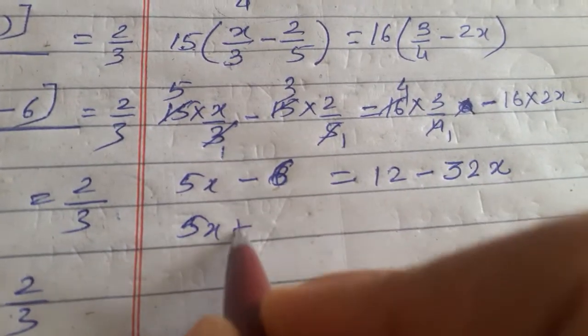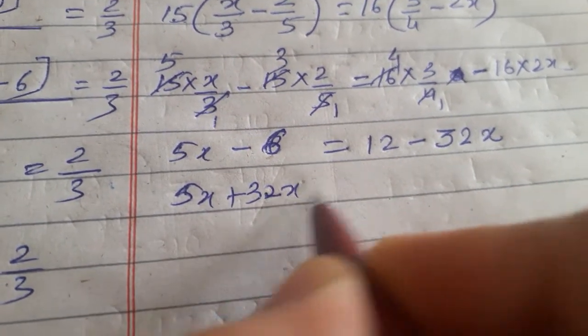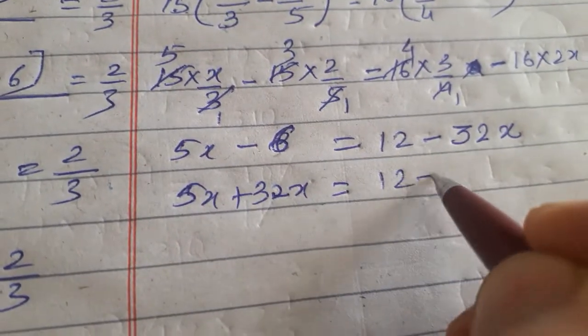Now collect the like terms, 5x plus 32x is equal to 12 plus 6.